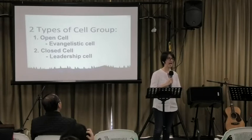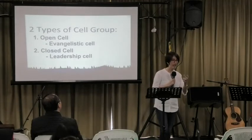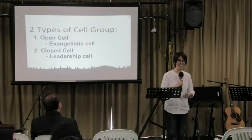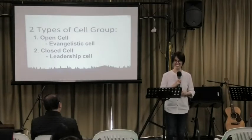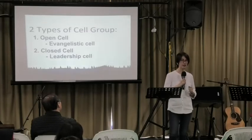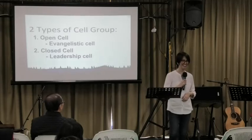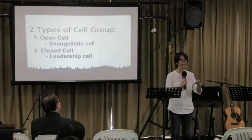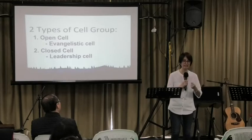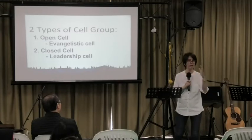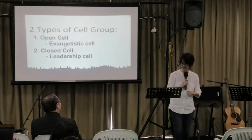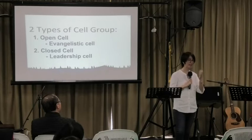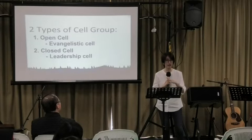Same thing in the ministry — a healthy cell should grow, a healthy cell should multiply, a healthy cell leader should grow, multiply, and develop. We're not here just to maintain a group. So what happens when that disciple inside the cell receives or catches the vision? Then that person will move from the open cell to the closed cell, which is the leadership cell. That person will be developed to become a cell leader also. This afternoon, I'll be talking about the process of how to become a cell leader — what a disciple should undergo to becoming a cell leader.